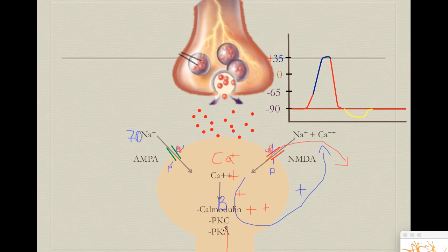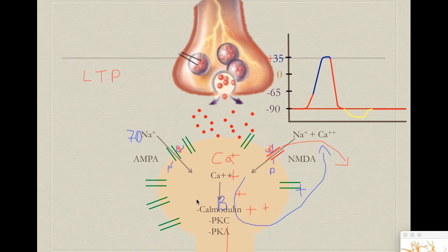It is obvious to assume that NMDA receptors cause an increase in synaptic ability or in the synaptic connection between two neurons. If we release glutamate many times or in high concentrations, this synapse will get stronger and stronger in a process called long-term potentiation (LTP). When we activate LTP through this NMDA channel, a neuron generates a stronger synapse and a stronger connection with a second neuron after a period of activation.